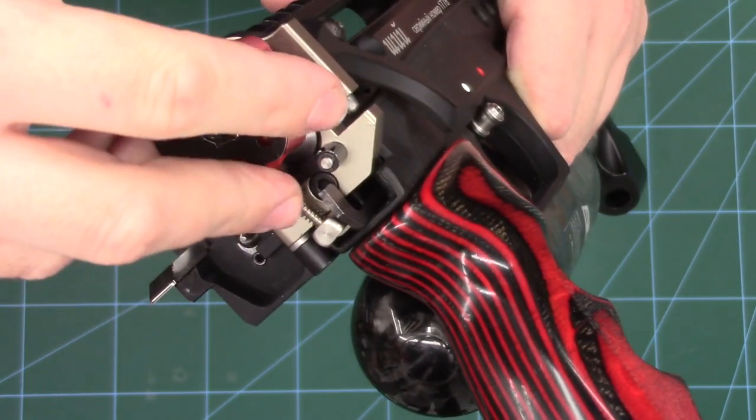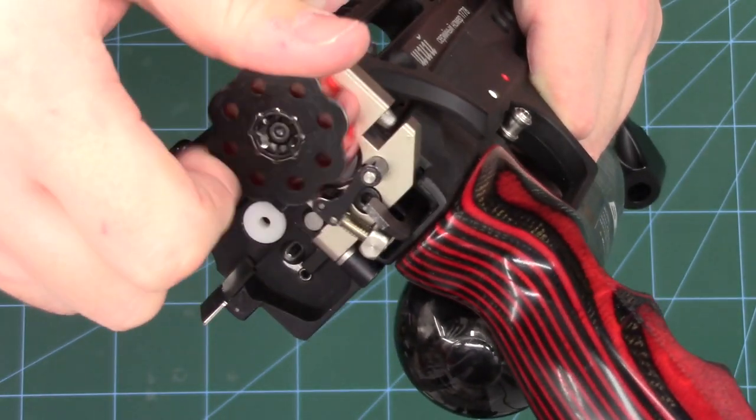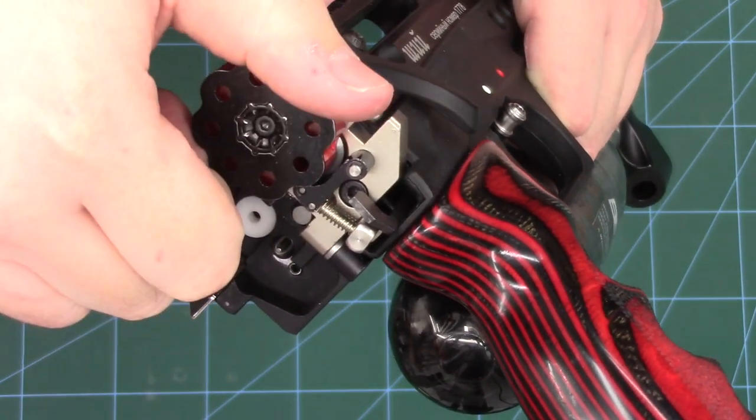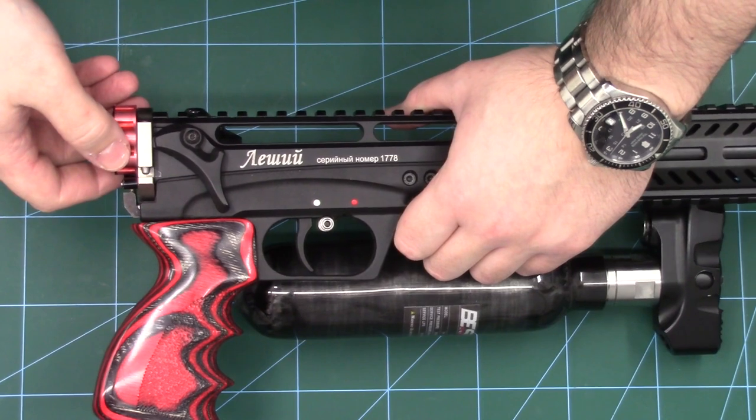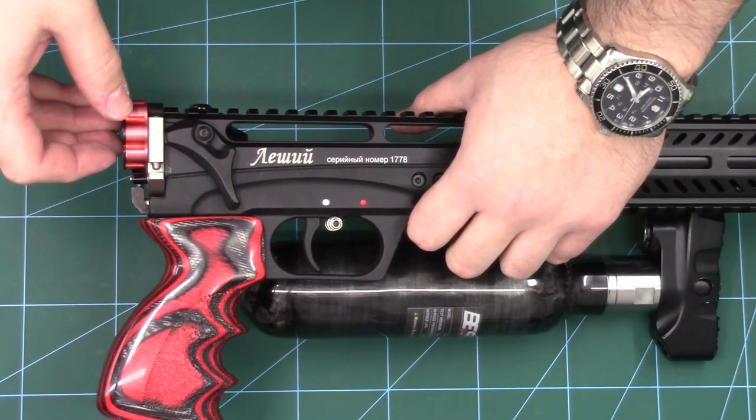So on my rifle, the magazine doesn't rotate as freely as it used to. It's a little gritty. I'm not experiencing any magazine jamming issues or anything like that, but it does look a little sorry for itself, so we're going to replace it.